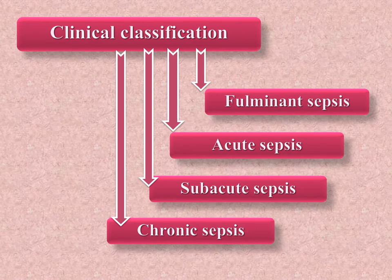Clinical classification of sepsis: fulminant sepsis, acute sepsis, subacute sepsis, and chronic sepsis. Clinical symptoms are fever, shivering, leukocytosis, tachycardia, tachypnoea, anemia, hemosiderosis, jaundice, hypoproteinemia, etc.